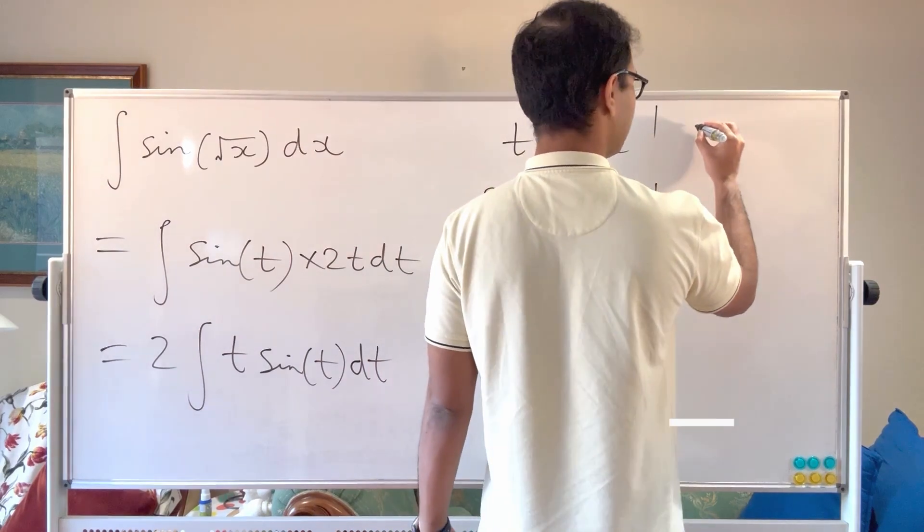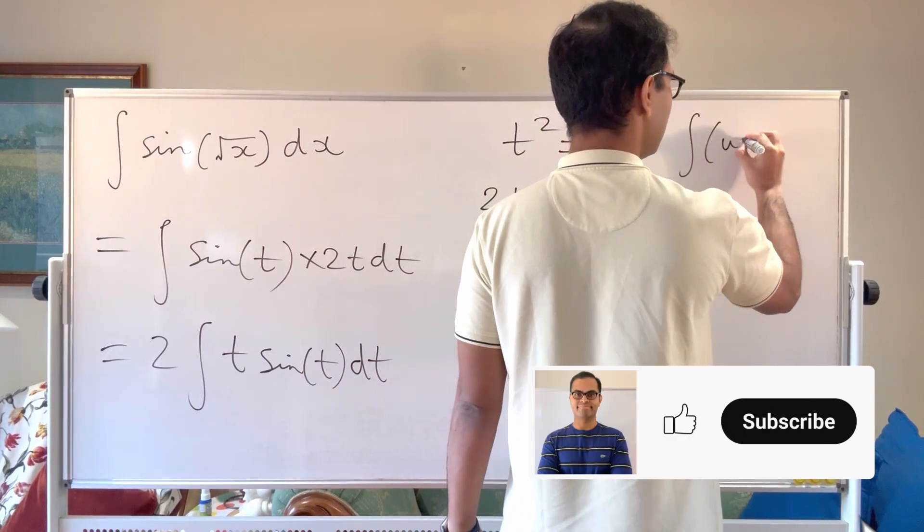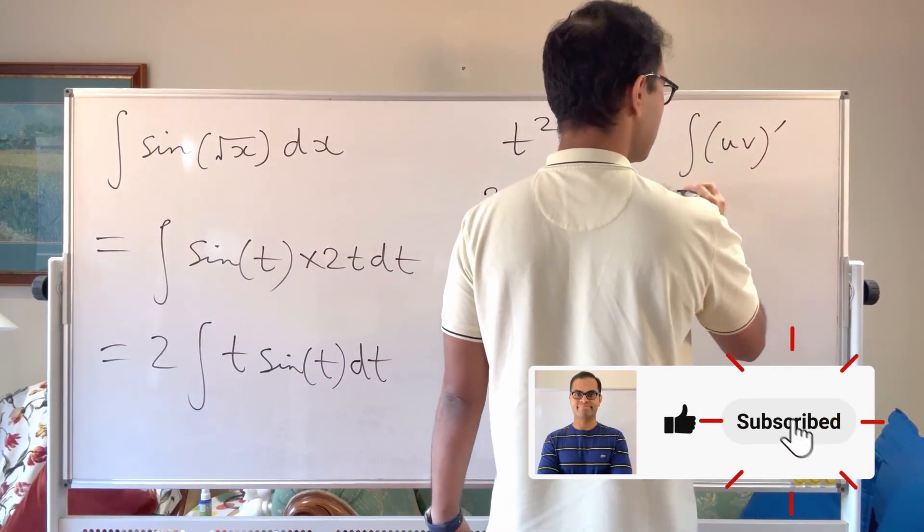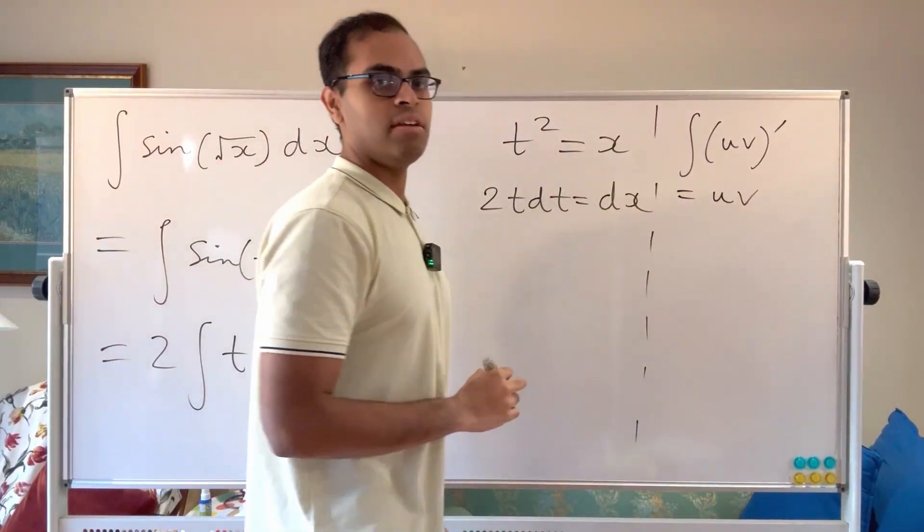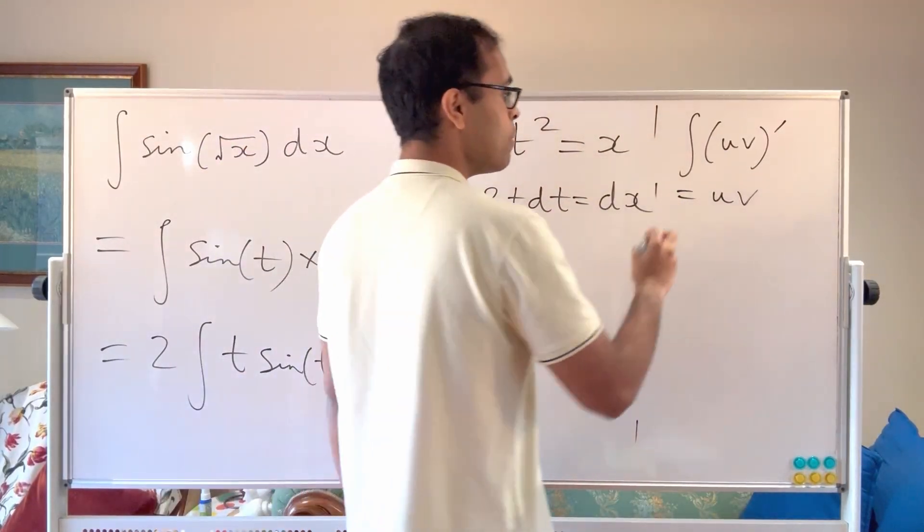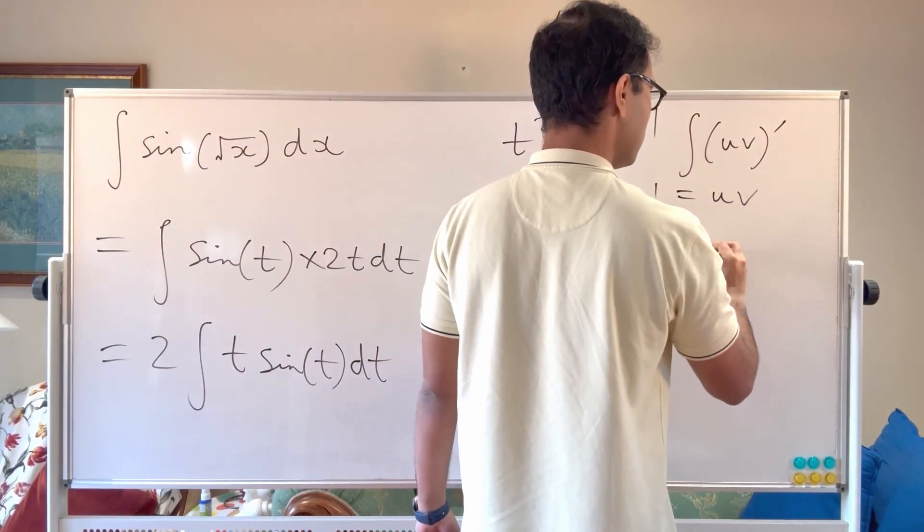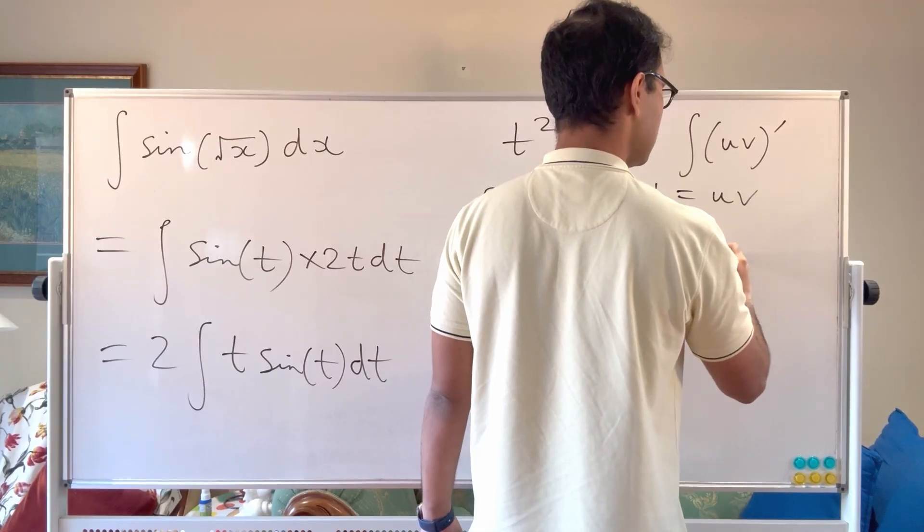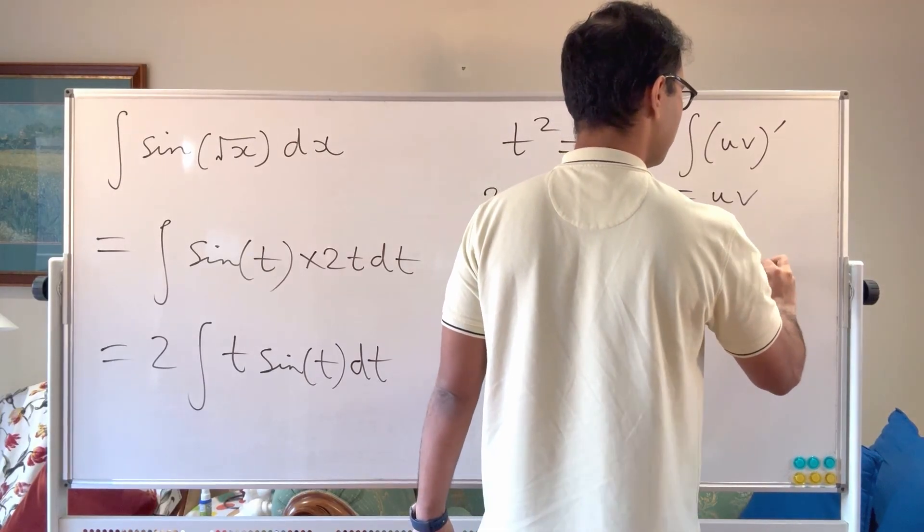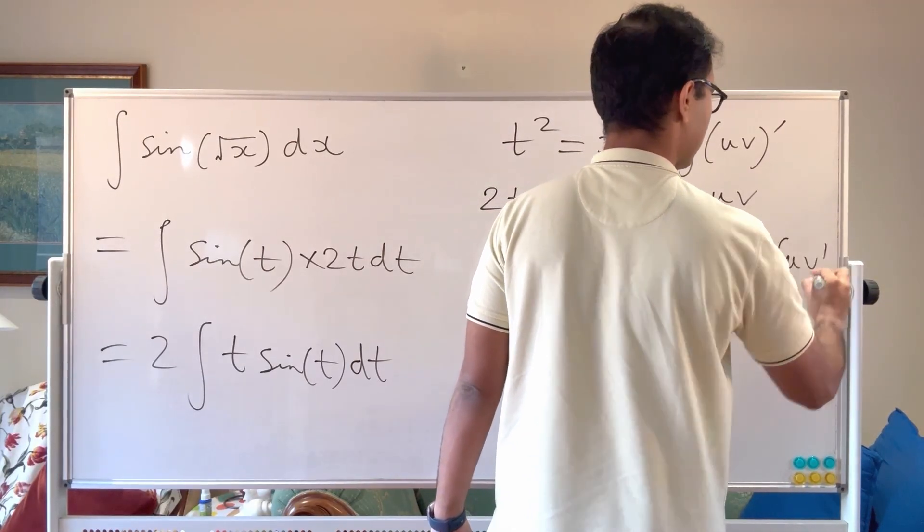So how parts works is basically if you take the integral of u v prime, you're just going to get u v. The integral and the derivative are inverses of each other. But by the product rule, the integral of u v prime is also going to equal the integral of u prime v plus the integral of u v prime.